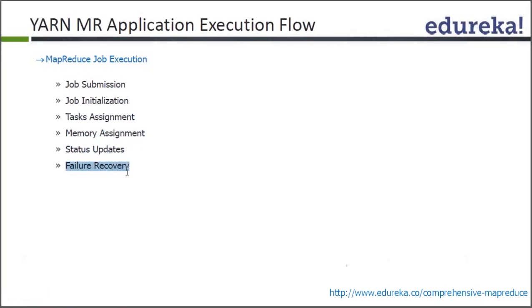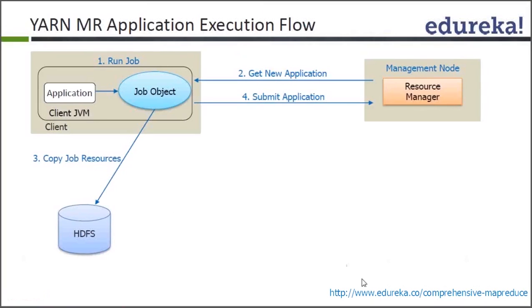If one of the nodes where the map runs fails, it will automatically be started on another node wherever the data is. So here we are going to talk about the execution of a MapReduce flow.